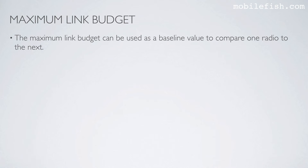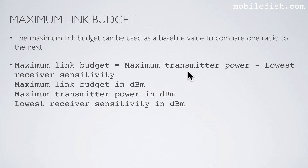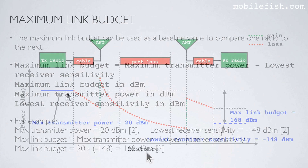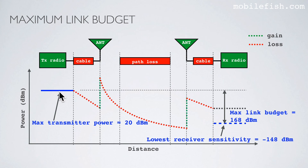The maximum link budget can be used as a baseline value to compare one radio to the next. To calculate the maximum link budget you can use this equation: the maximum link budget equals the maximum transmitter power minus the lowest receiver sensitivity. For example, the maximum transmitter power is 20 dBm and the lowest receiver sensitivity is minus 148 dBm, giving a maximum link budget of 168 dBm.